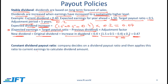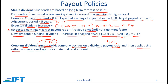Then we can have a constant dividend payout ratio, where the payout ratio is kept constant. A company decides on a payout ratio — let's say that payout ratio is 40% — and then applies this ratio to current earnings to calculate the dividend amount.